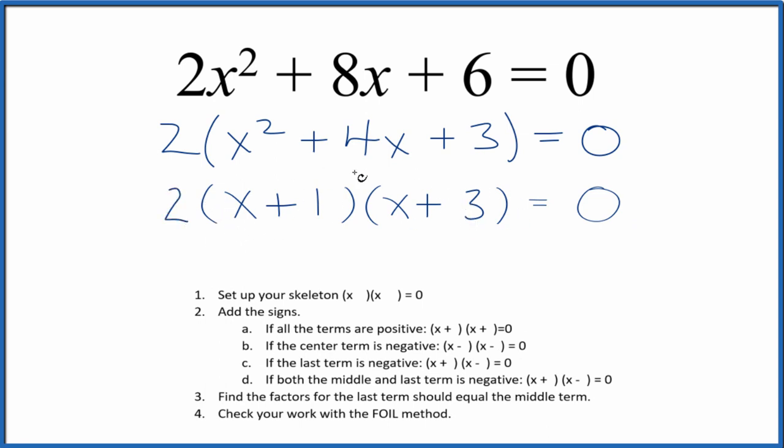Now if you check this with the FOIL method here, you'd have first, outside, inside, and then last, you'd end up with... we can combine these to 4x. We have x² + 4x + 3. That's what we had right here.